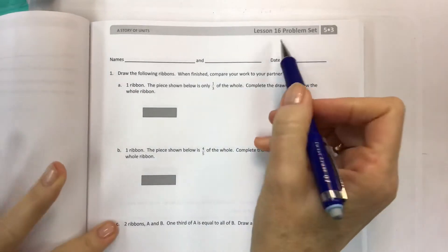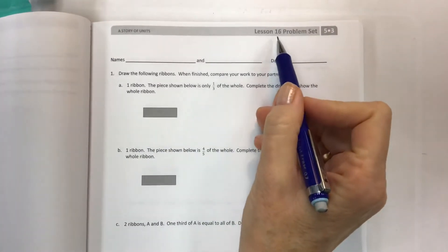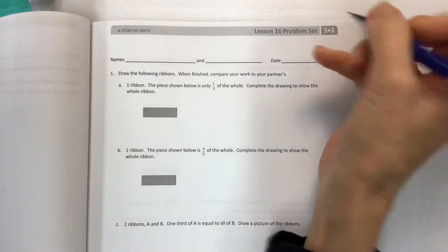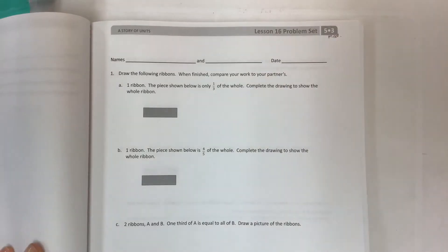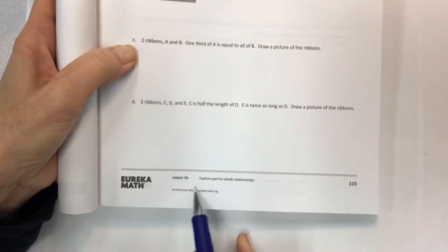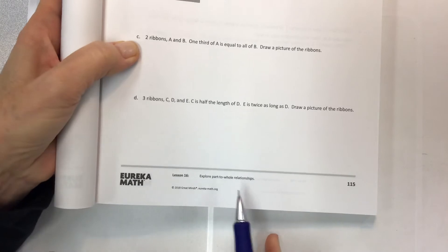Hey kids! Welcome to the last lesson in Module 3. Hooray! And then we're going to be starting Module 4 next time. Lesson 16 in Module 3 has the objective, as written at the bottom: explore part-to-whole relationships.